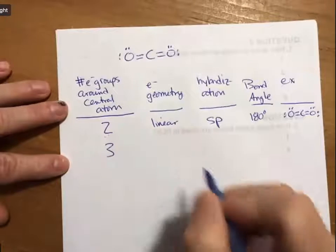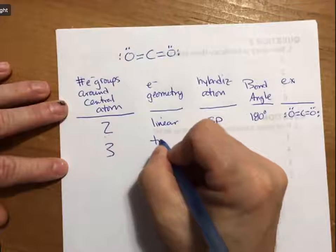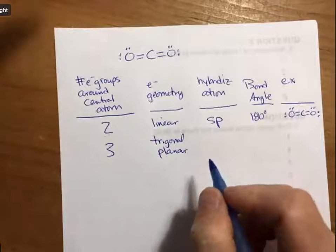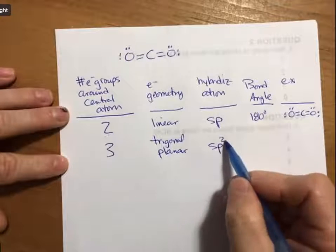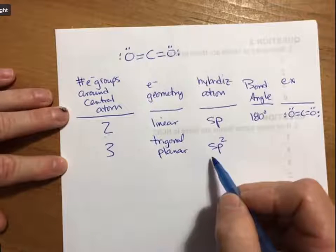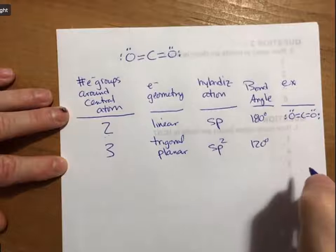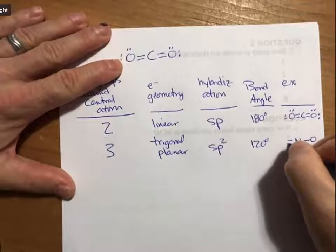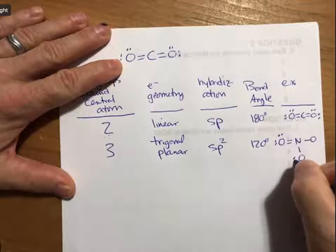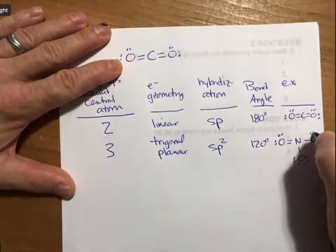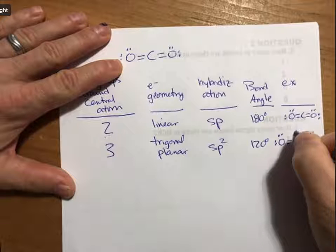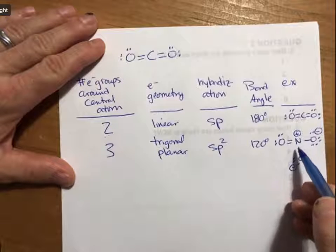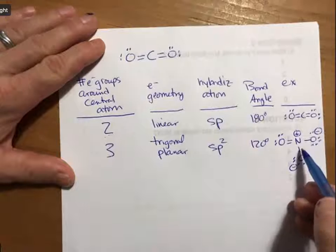For three electron groups, we have trigonal planar geometry with three hybridized orbitals, which will be sp2. The bond angle is 120 degrees, and a good example is the nitrate that we just did. If you look around the central atom, there are three electron groups: one, two, three.